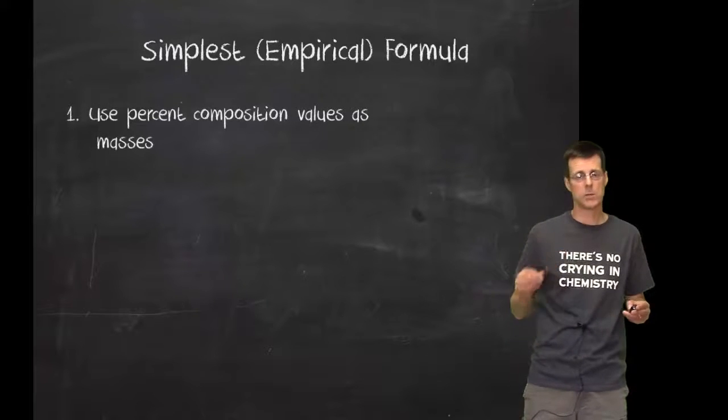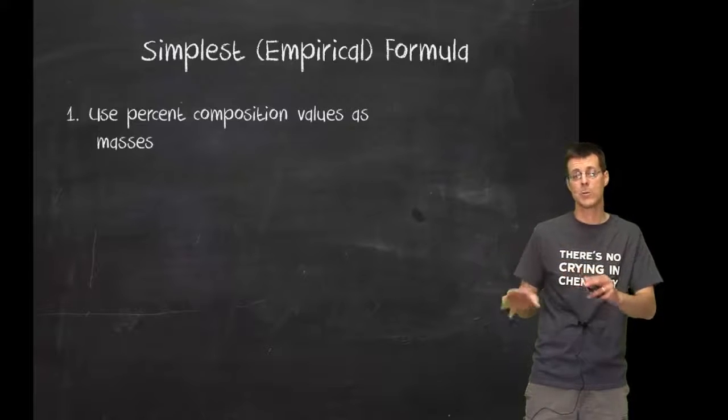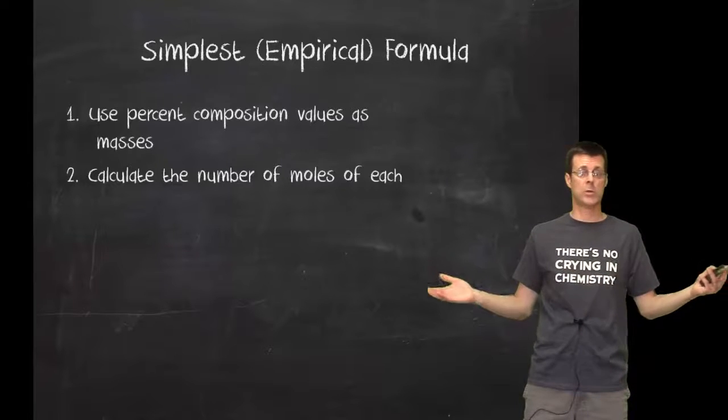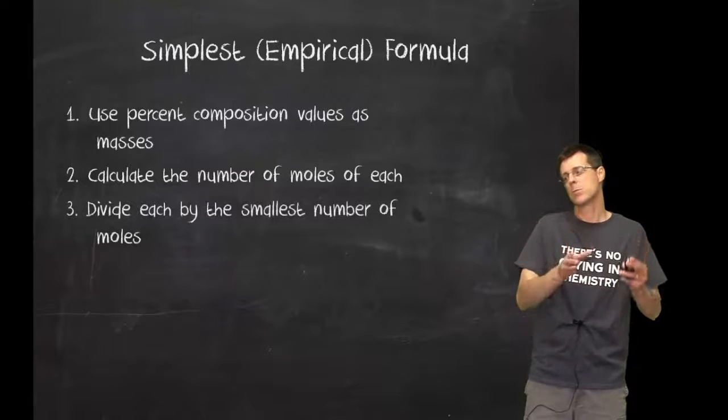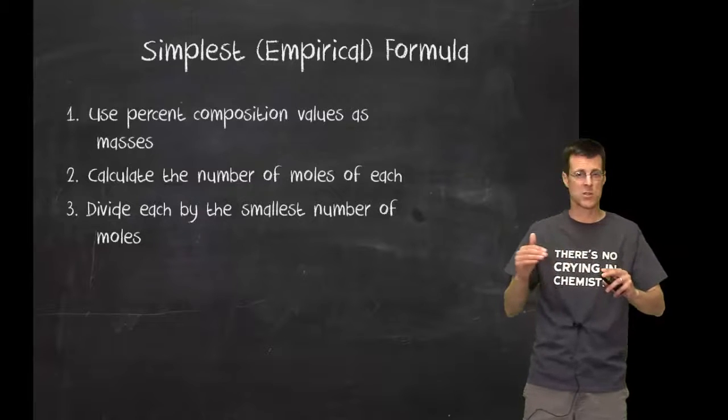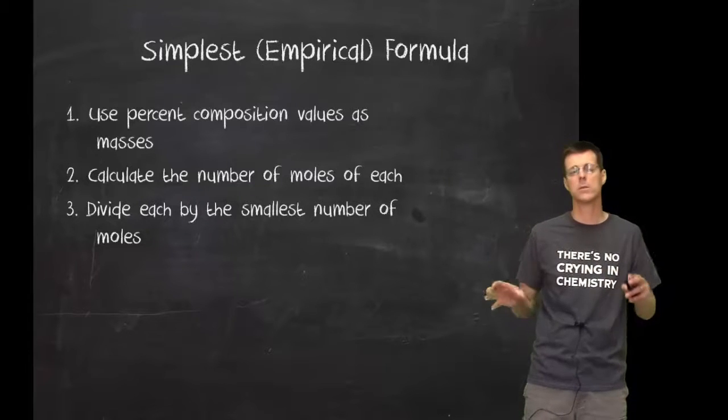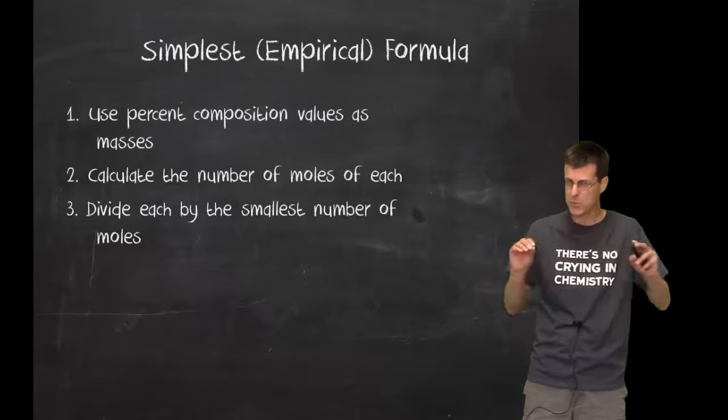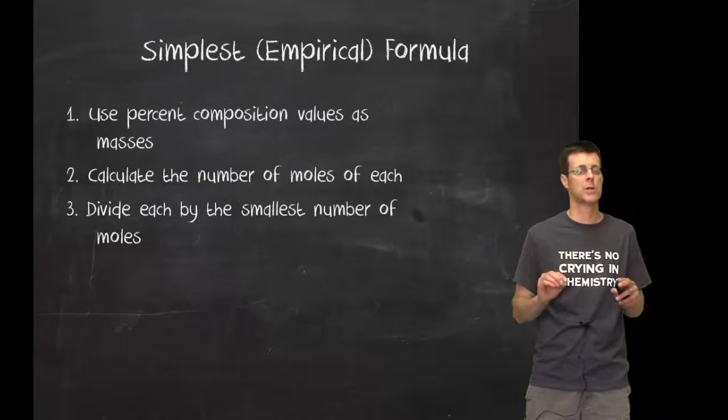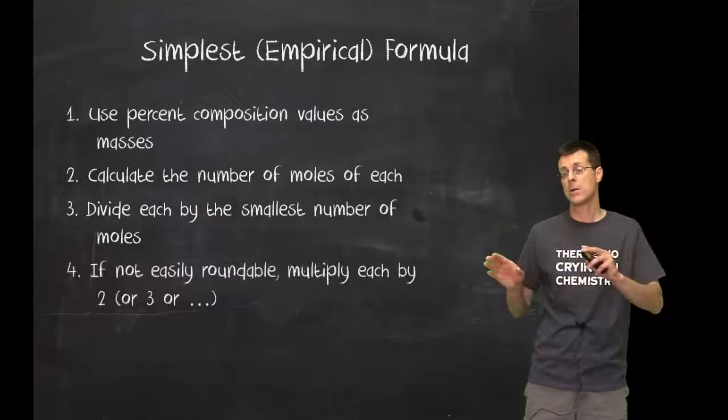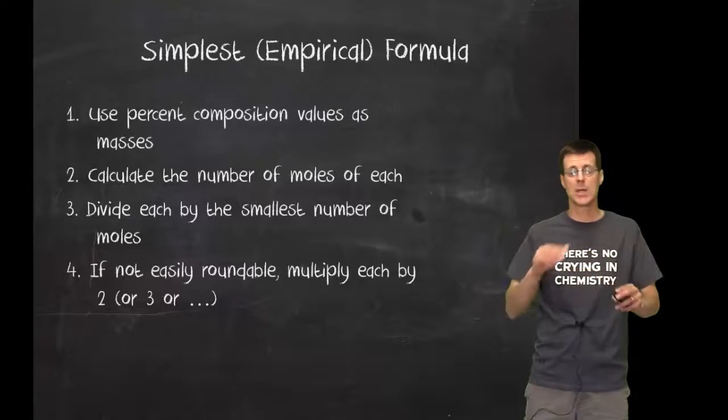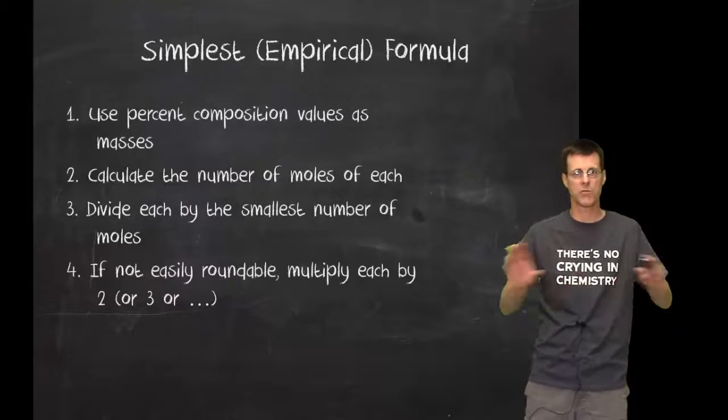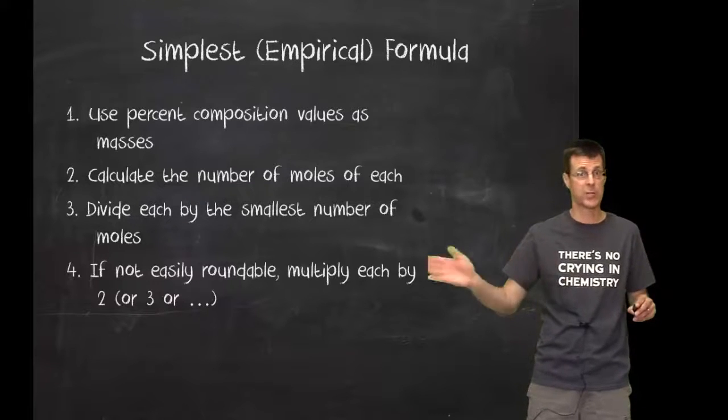The first thing you're going to do is use the percent composition numbers as masses. Then you're going to use those masses to calculate number of moles, which we know how to do. Then you're going to turn those number of moles into a ratio by dividing by the smallest number. That seems a little bit weird, seems kind of hocus-pocus maybe, but that's going to work really well. You'll have to do a bit of rounding off here, but we want to be careful how much rounding off we do because step four is if it's not easily roundable.